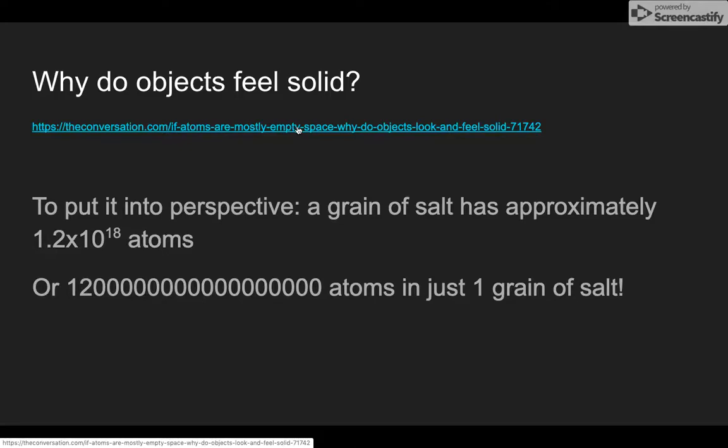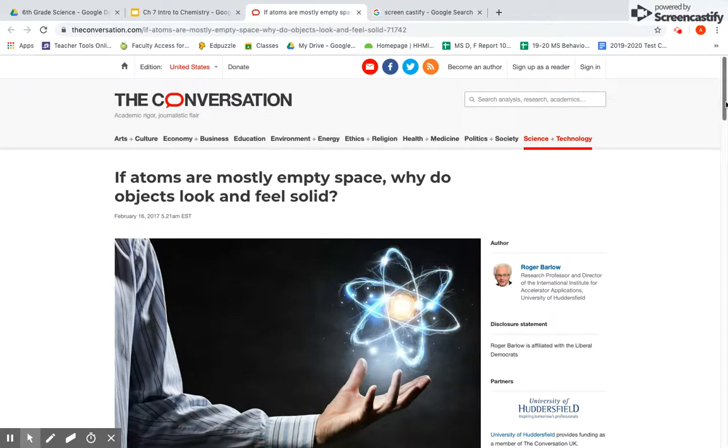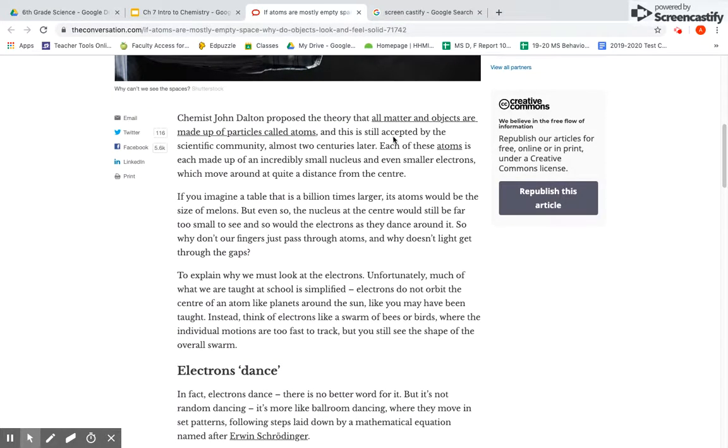So why objects feel solid. I'm gonna go to this article right here. It's actually a really cool, interesting read. And I'm not gonna read the whole thing. I'm just kind of bits and pieces here. So we can see that everything is made up of particles called atoms. So they are incredibly small. And basically, we have a nucleus in the center that has our protons, neutrons, and then we have electrons that kind of dance around it. The question here is, so why don't our fingers just pass through atoms? And why doesn't light get through the gap? So why can't we shine light through a table, because it's just made up of individual pieces? Why can't we touch it? So to explain why we must look at the electrons.